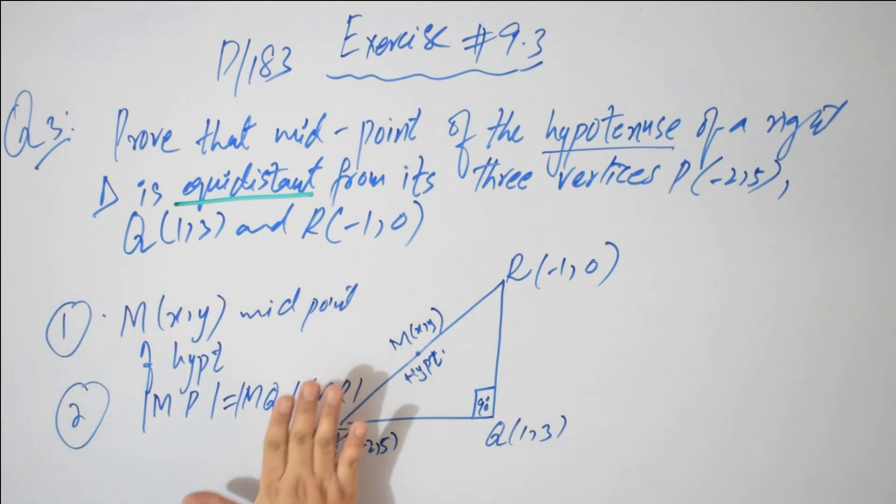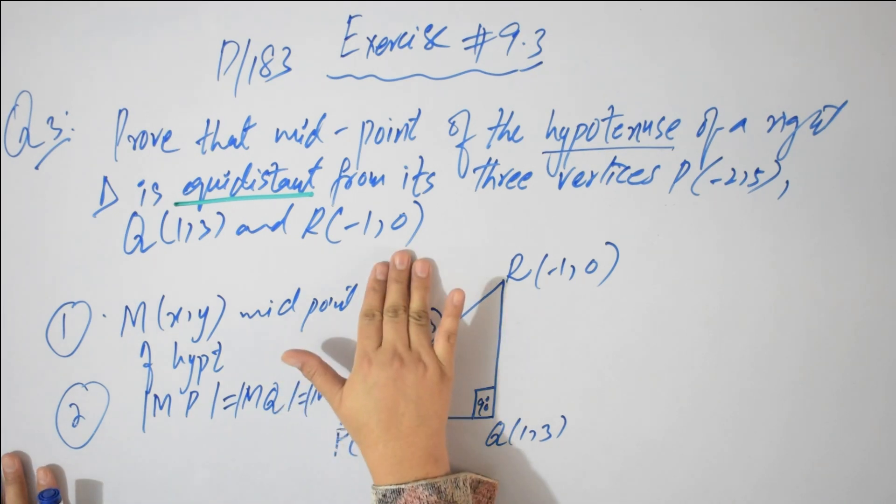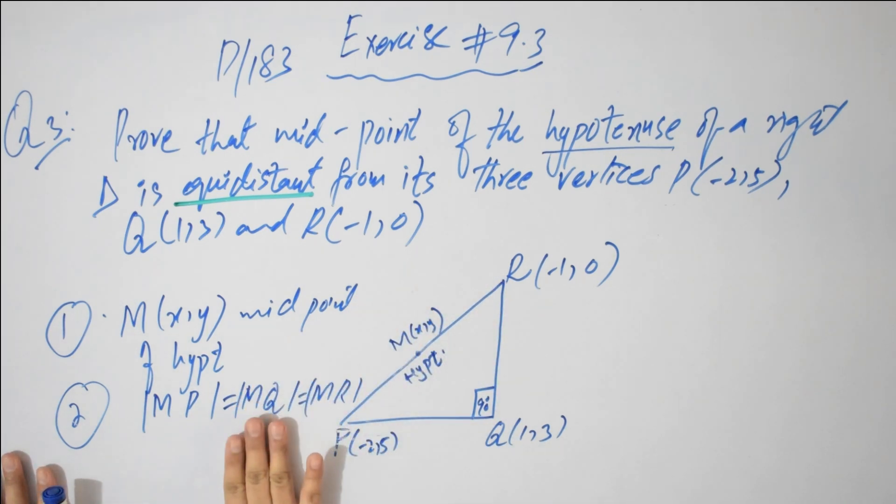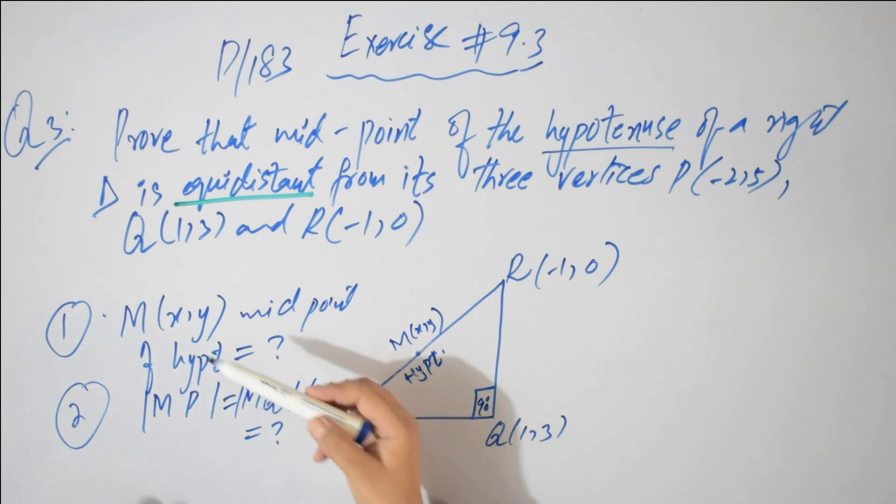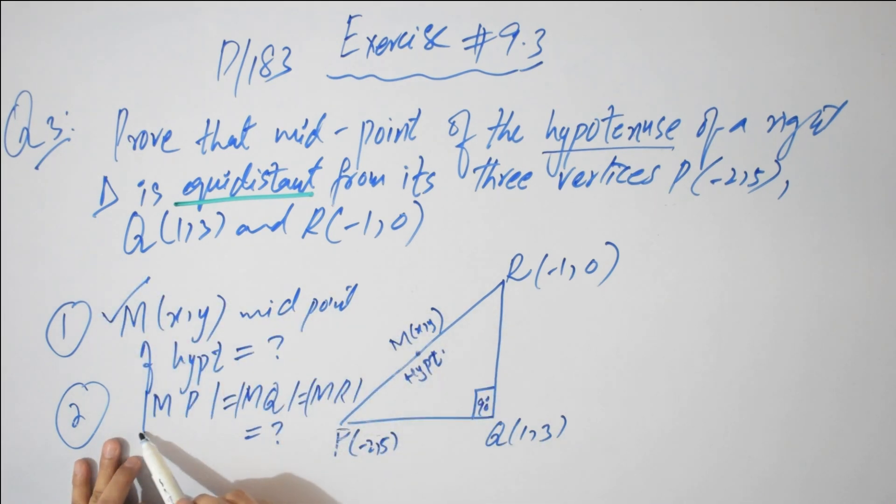So first target is find midpoint of hypotenuse. Second, your second plan is to prove equidistance. Equi means equal and distant means distance, so this distance of this midpoint is equal from three vertices P, Q and R. In first part, you will apply midpoint formula. In second part, you will go for distance formula.